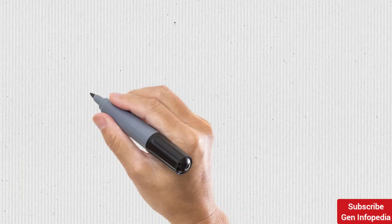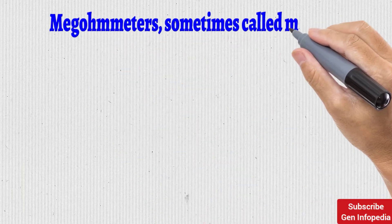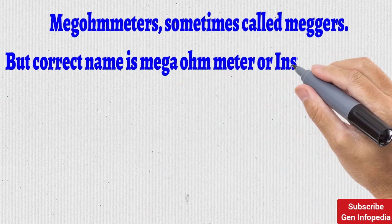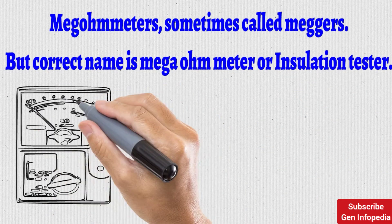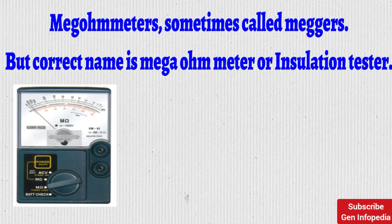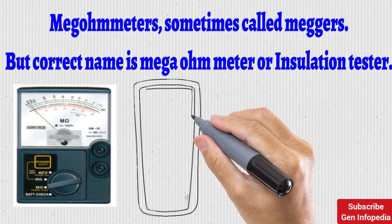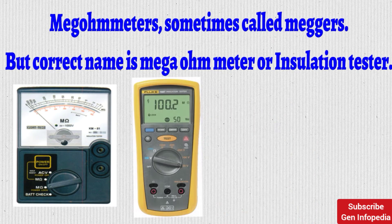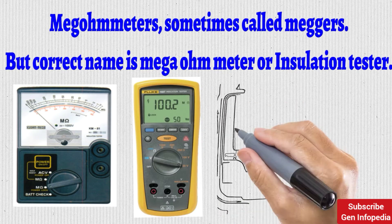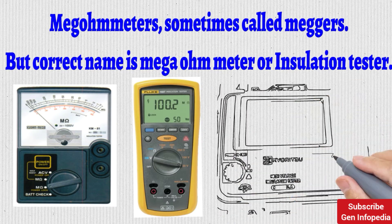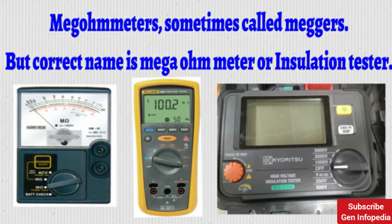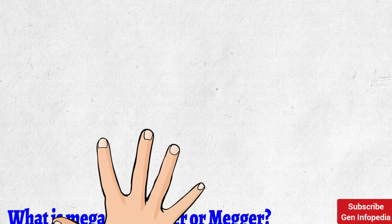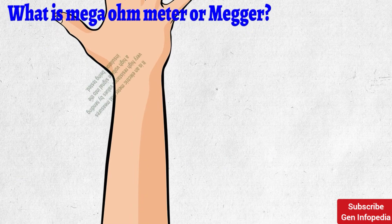Megaohmmeter — sometimes we all call it 'mega,' but the correct name is megaohmmeter or insulation tester. 'Mega' is actually one insulation tester manufacturer's name, so don't confuse that with megaohmmeter. Megaohmmeter is the correct name.